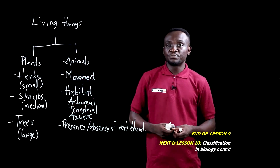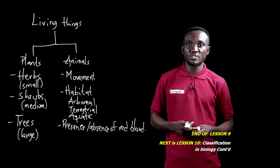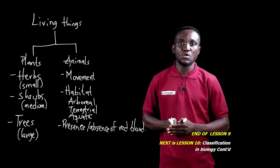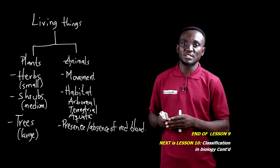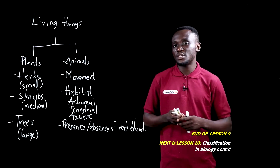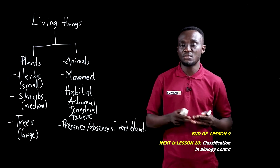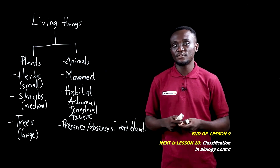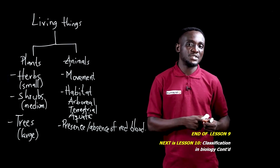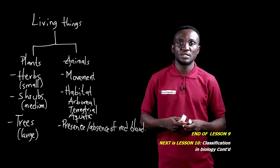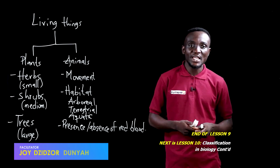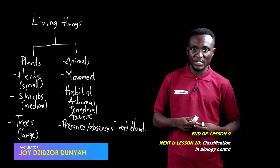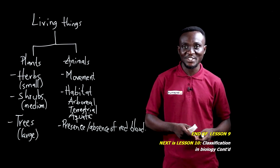In this lesson, we looked at classification in biology from Aristotle's perspective. He classified all living organisms as either plants or animals. Plants were classified as herbs, shrubs, or trees, largely depending on size. Animals were classified by the way they move, where they live — their habitat — or whether they possessed red blood or not. In our next lesson, we'll continue the discussion on classification in biology. We'll see you in the next lesson.